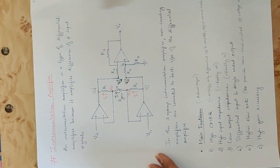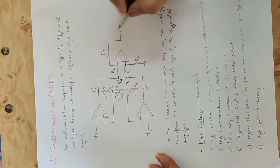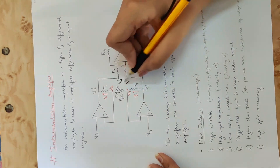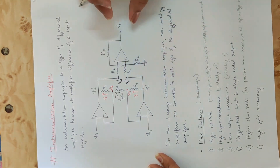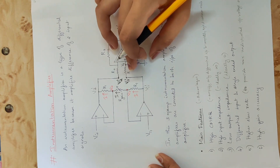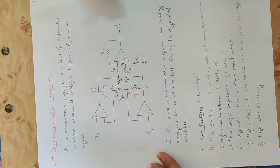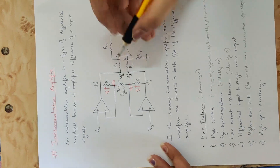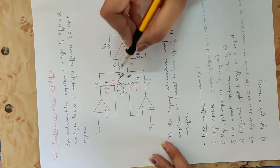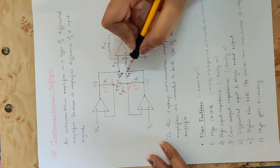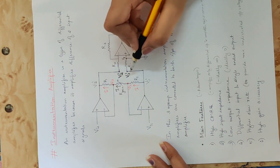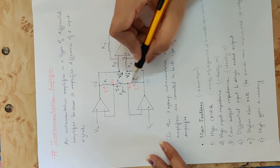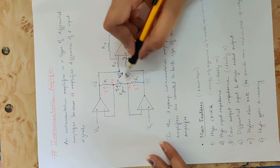We are going to use the superposition theorem to find the output voltage equation. By superposition theorem, we consider two inputs. For one input applied — that is Vi1' — we find the output.